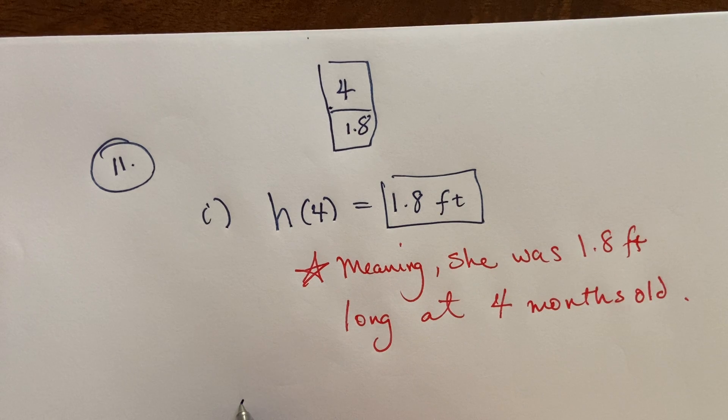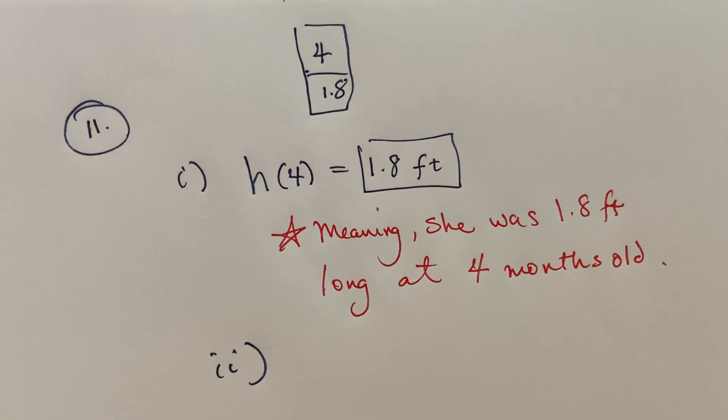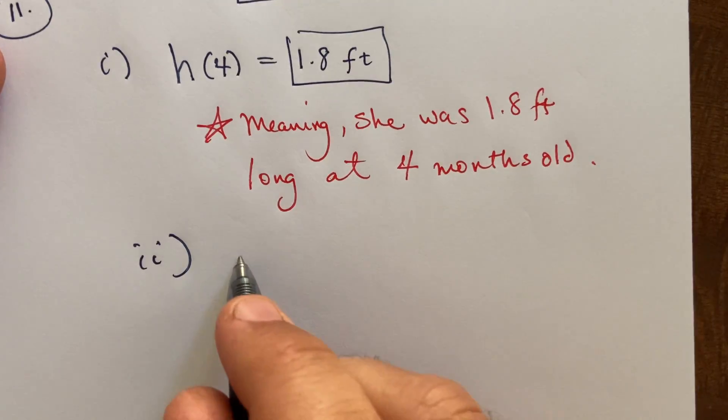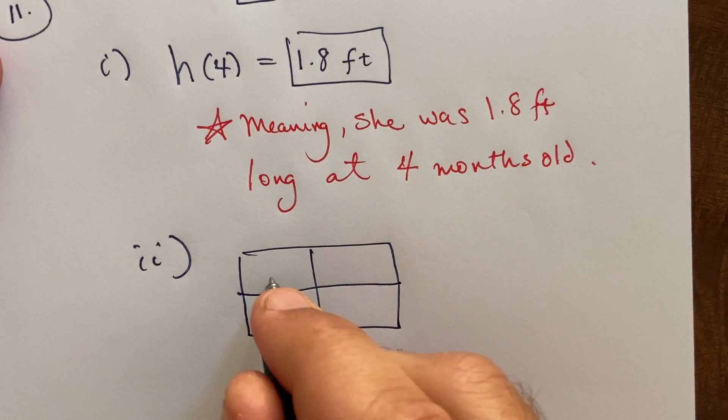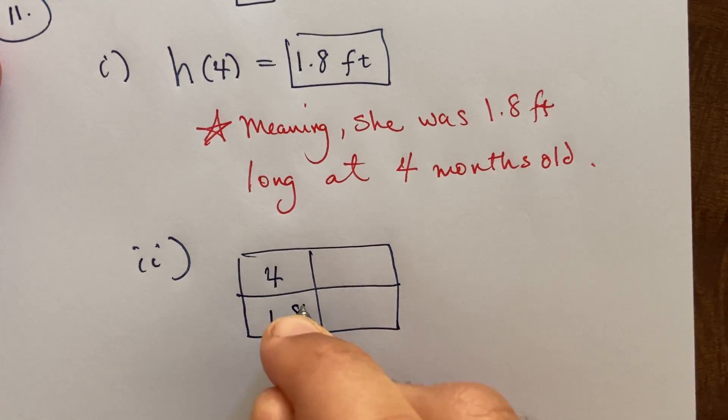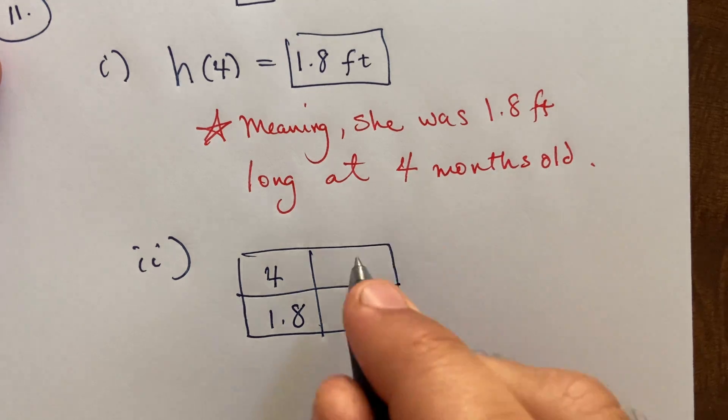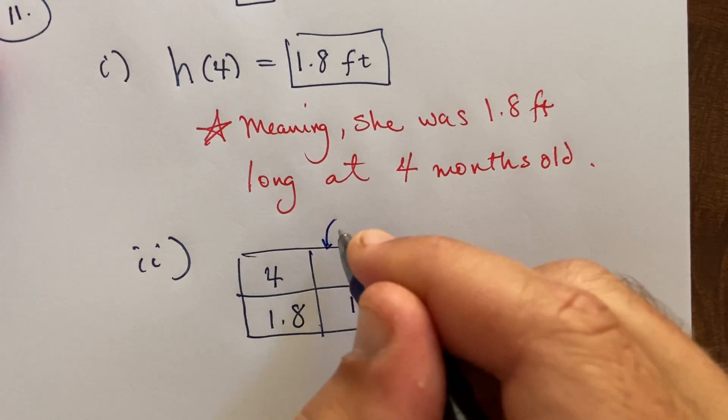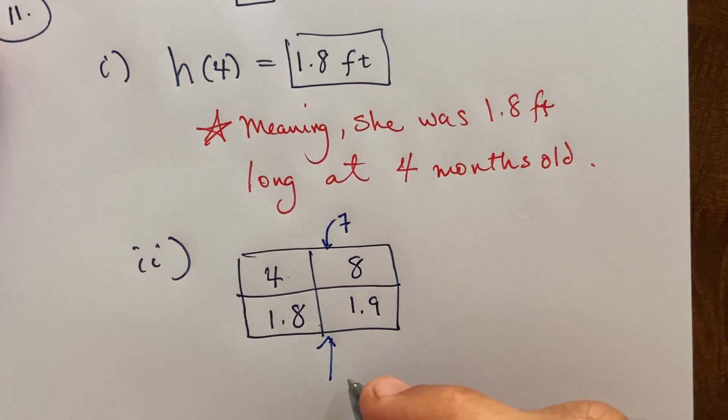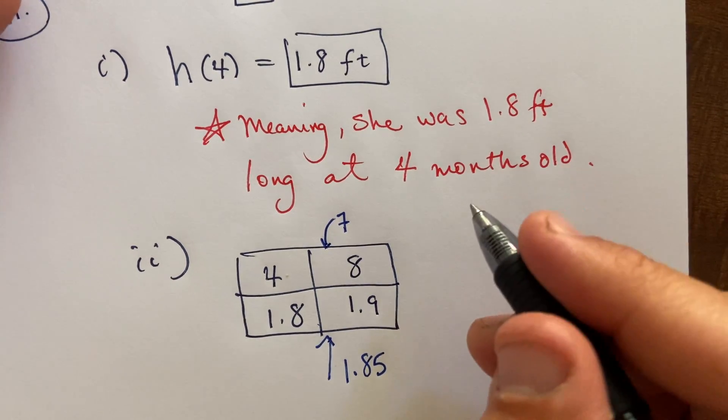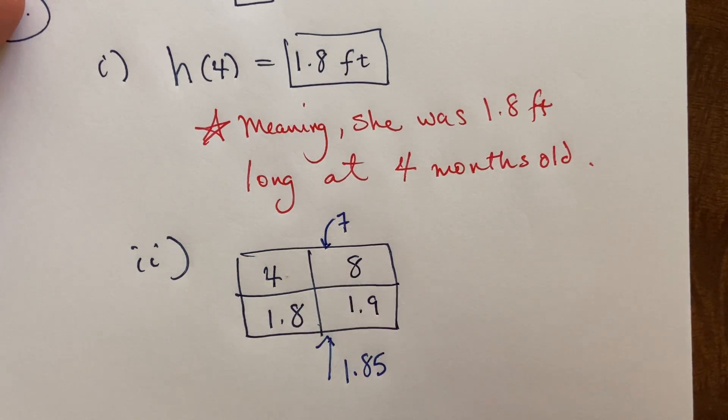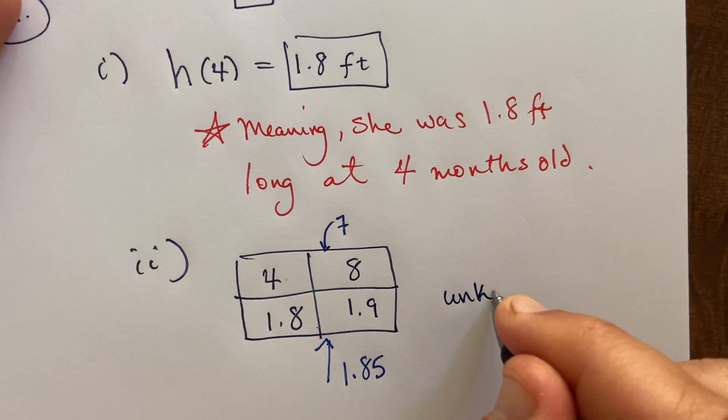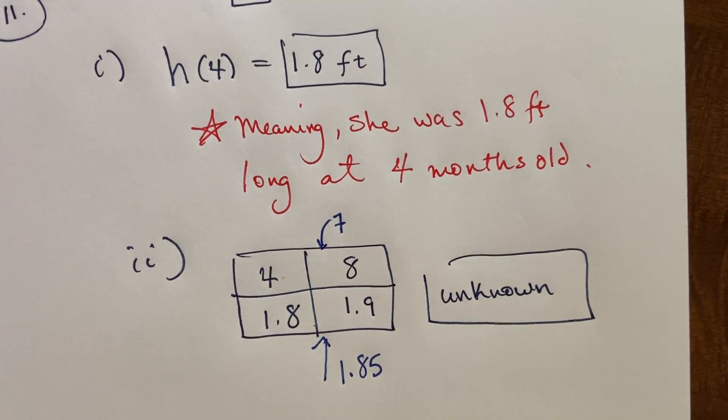What is h of seven? So from the table, actually there is no seven. It looks like it should be between one point eight and one point nine, but let me show you what I'm looking at. We have these two cells, one of them is this four, one point eight cell, and then the other one is this eight and one point nine. So seven, I think logically would be somewhere in here. So we would expect the height maybe to be like one point eight five or the length, what have you. But my point is that this is all a guess, and that we don't actually know. So I'm just going to say unknown actually.